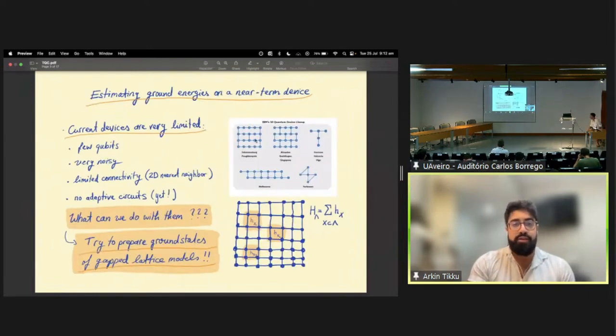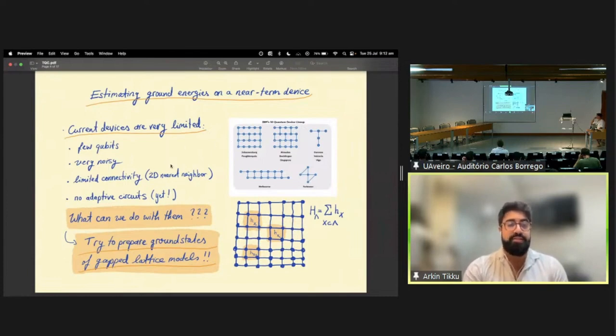We all know that the quantum devices currently around are still fairly limited. They have very few qubits, they're very noisy, and when it comes to superconducting qubits, they still suffer from things like very limited connectivity, which is just limited to some 2D nearest neighbor architecture. Furthermore, adaptive circuits are still very difficult to implement. Given those limitations, one may ask, what can we do with these devices in the near term? One of the most common tasks to consider is the preparation of ground states of local Hamiltonians.